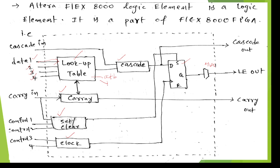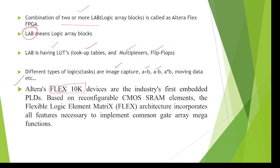The lookup table stores user-required logic functions. The flip-flop is used to store data and execute the required function. The multiplexer selects the required logic to produce the user-required output. The outputs from the logic element include cascade out, logic element output, and carry output. This is the internal reconfigurable logic block of the UltraFlex 8000 FPGA.